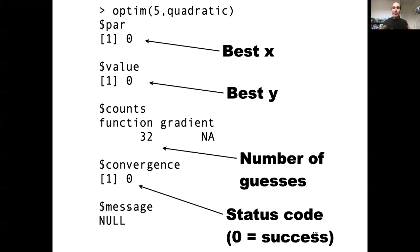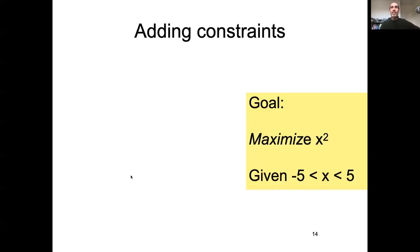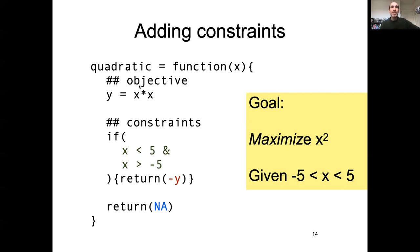So how do we take something like that and add some constraints? So here, let's say I want to maximize x squared over the range from minus 5 to 5. So I would start with the same objective function. But I would now add constraints. And the easiest way to add constraints is just through use of if statements. So our constraints are that x has to be less than 5 and x has to be greater than negative 5. So we would write if x is less than 5 and x is greater than minus 5, return that value.